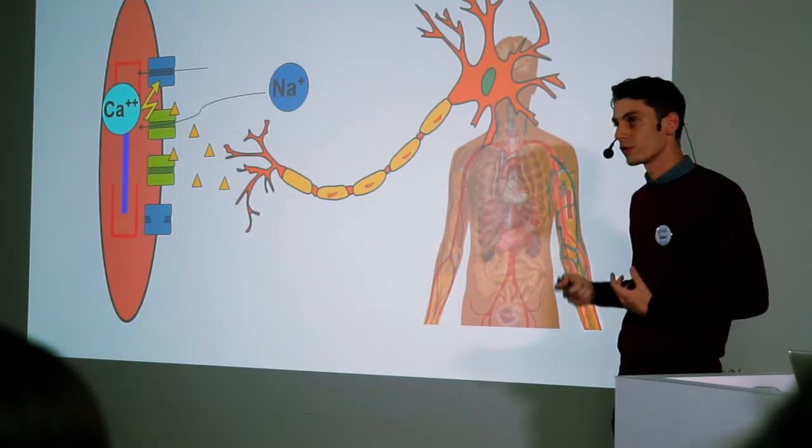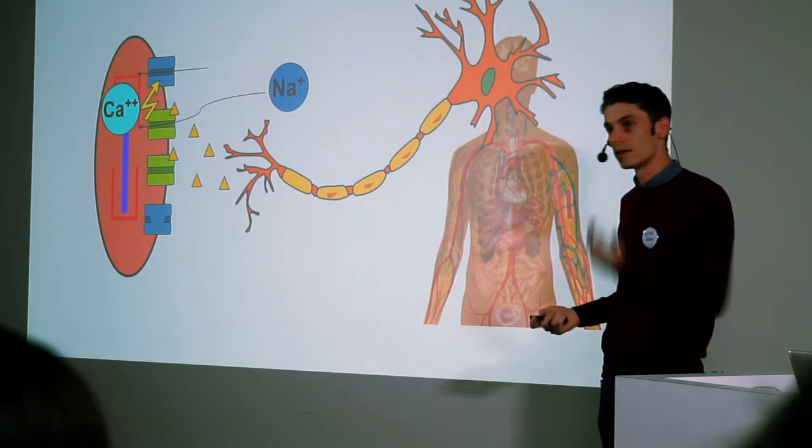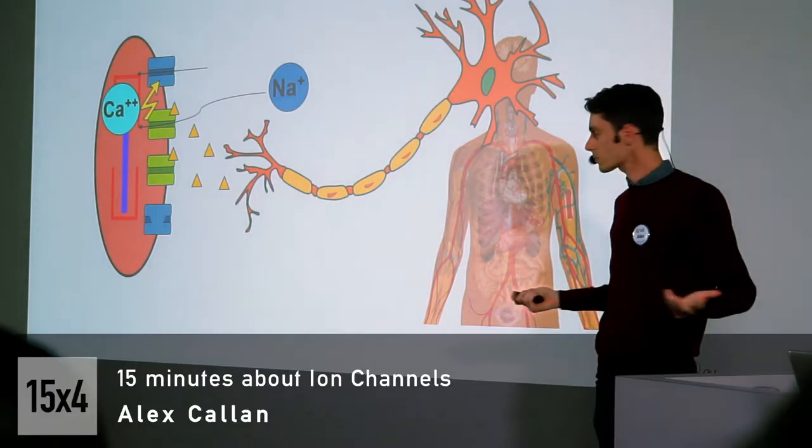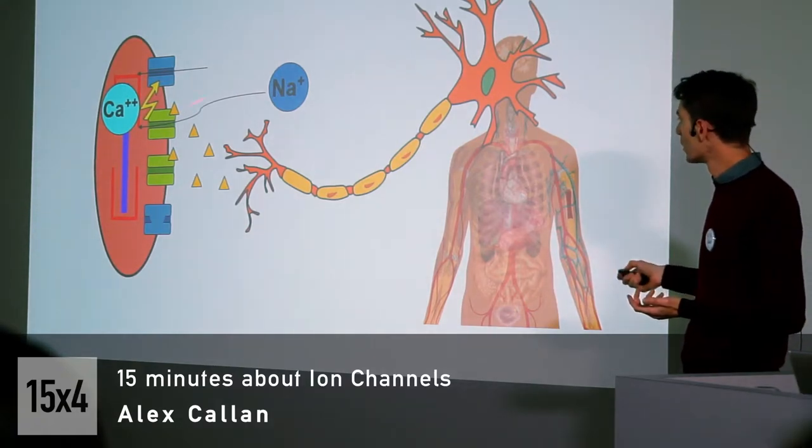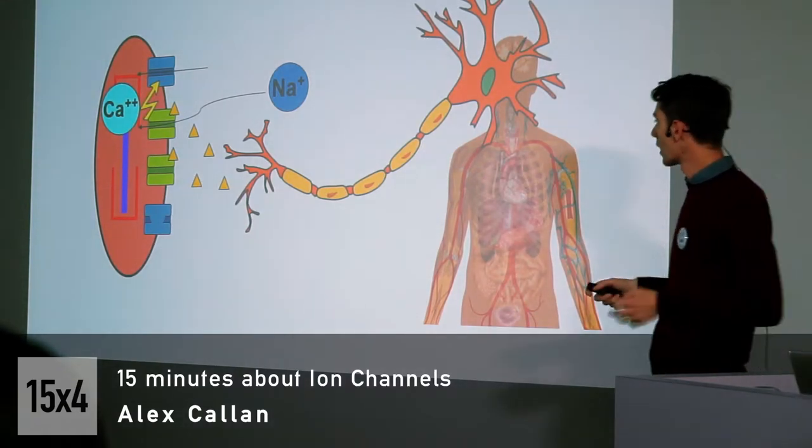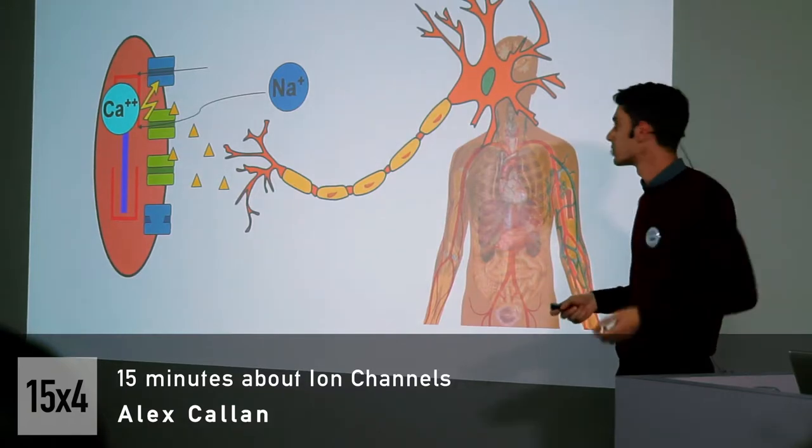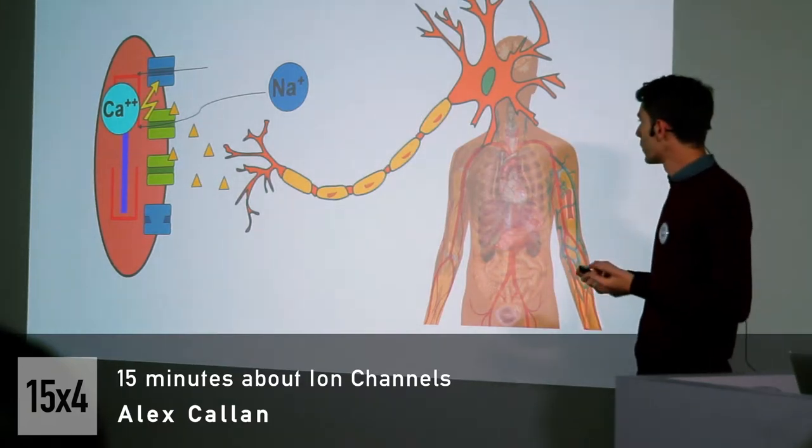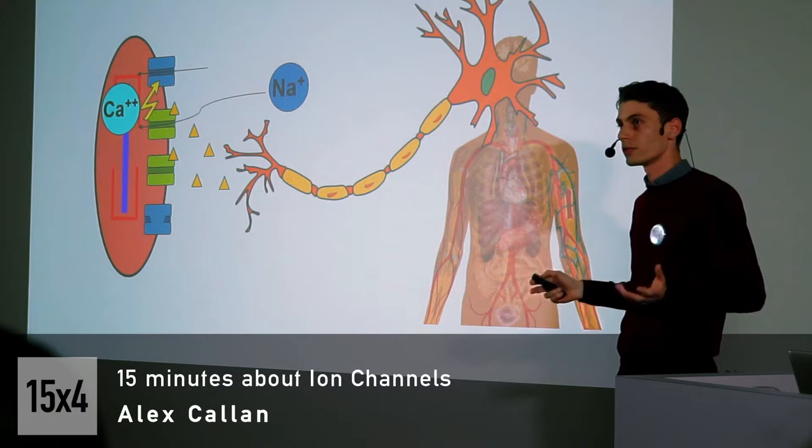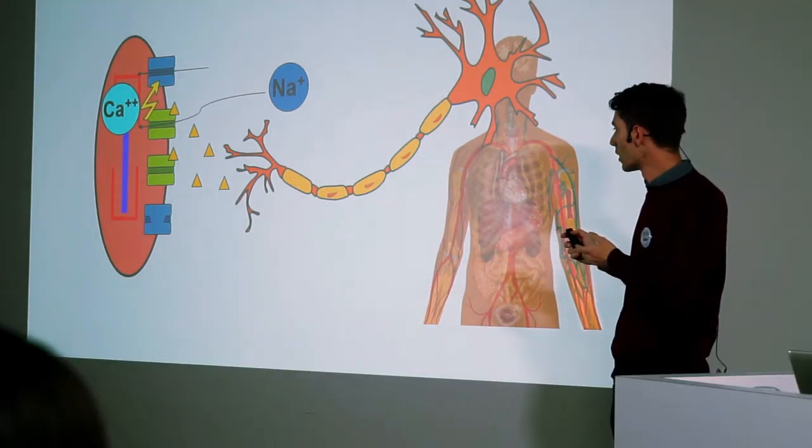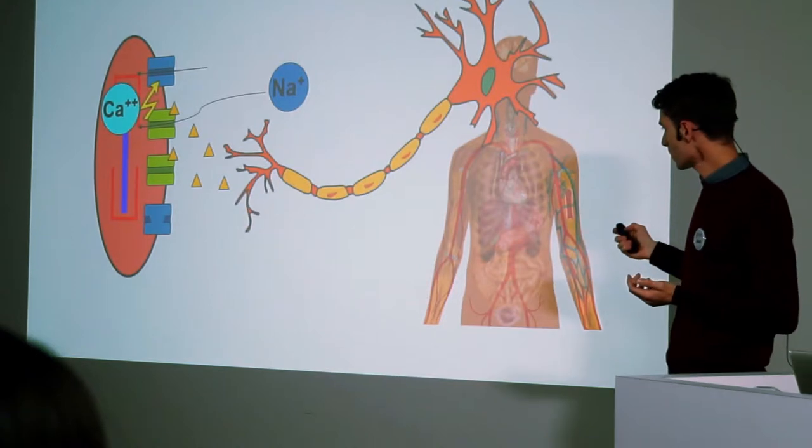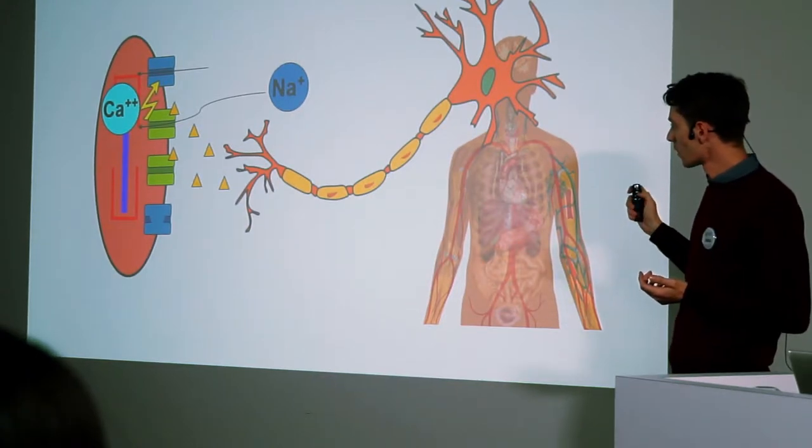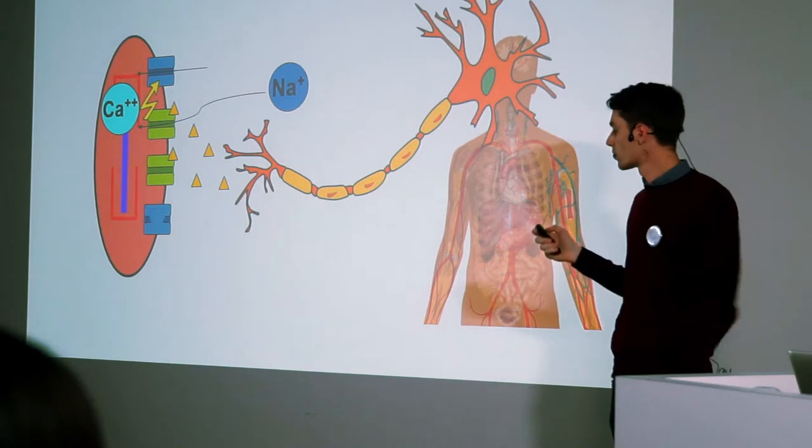That is passed to these other ion channels—the calcium channels—which allow the calcium ions to get inside. The calcium ions can bind to the protein filaments, the muscle contracts, you can scratch your nose. So that's how ion channels of different types, being opened at specific times, allow us to do simple things like scratching your nose. We know that as long as we don't do anything too ambitious, this process usually works out pretty well most of the time.